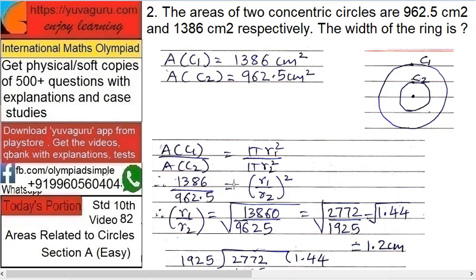That's why we are doing all these things. Area of circle we know: 1386 upon 962.5. So 1386 upon 962.5 equals R1 upon R2 the whole square. Pi pi gone.